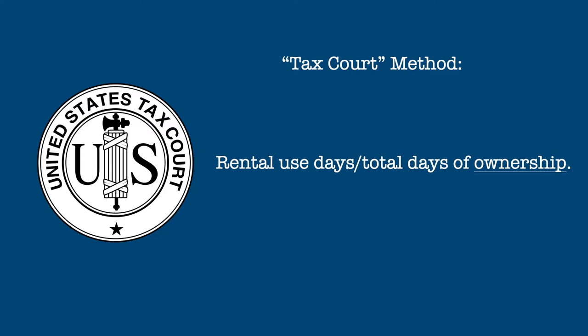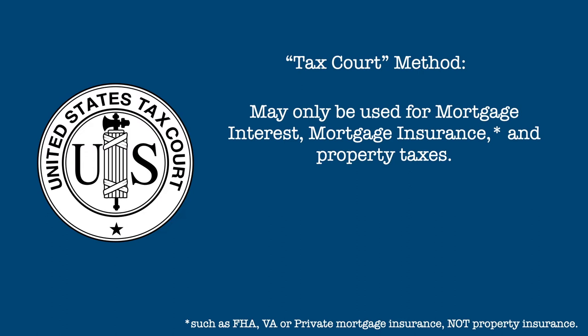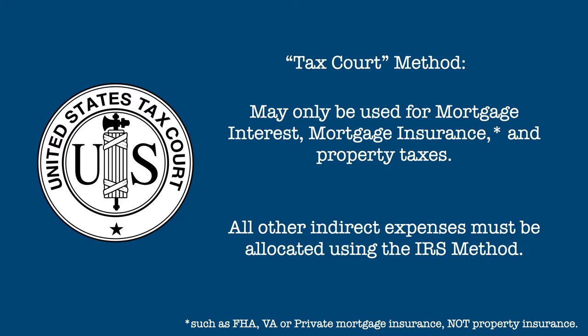The other method is called the tax court method, which compares the days of rental use to the total days of ownership of the property. Using the tax court method with the figures from the previous example, you would divide 125 rental use days by 365 ownership days if you own the property for the entire year. Using this method, you would deduct 34.2% of the expenses from rental income. The tax court method may only be used to compute deductions for mortgage interest, mortgage insurance, and property taxes. All other expenses must be apportioned using the IRS method.